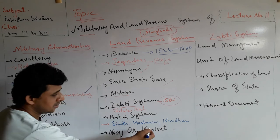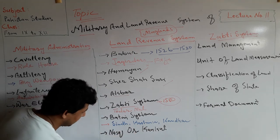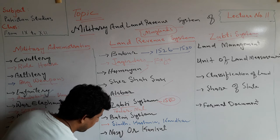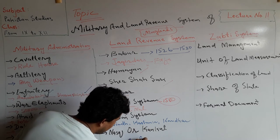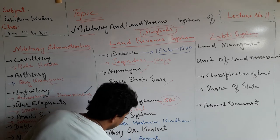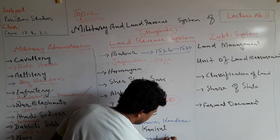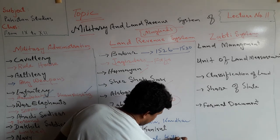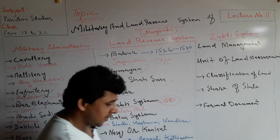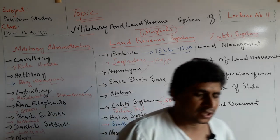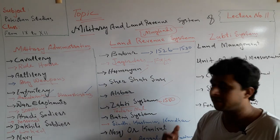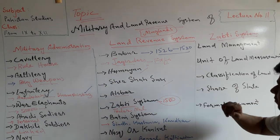The Konkut system was introduced in Gujarat, Bengal, and Kathiawar. In this way, the land revenue system continued throughout the Mughal period, especially under Akbar.